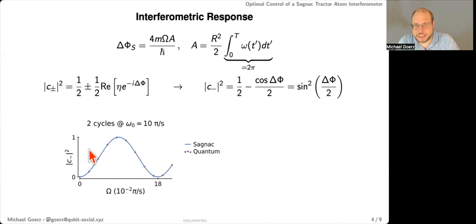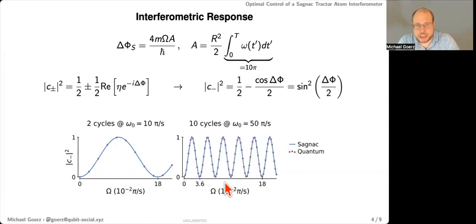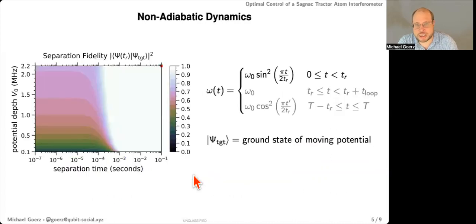So then the population looks something like this, and it depends on the background rotation. And you can see that you get some kind of millirad precision in this case. Or if you want higher precision, then you can do more cycles. So this is 10 cycles at a higher speed, just to have the same total duration of the interferometer, and correspondingly, you get better precision.